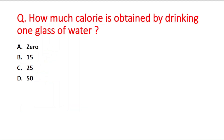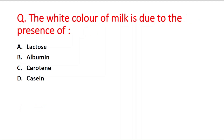Next question: how many calories are obtained by drinking one glass of water? Option A is 0, B is 50, C is 25, and D is 15. The right answer is option A — 0 calories. Next question: the white color of milk is due to the presence of —